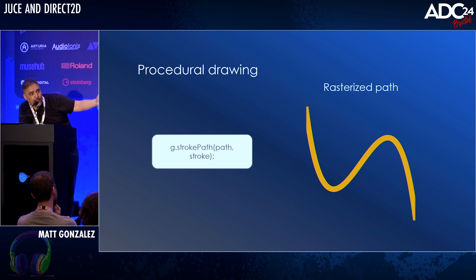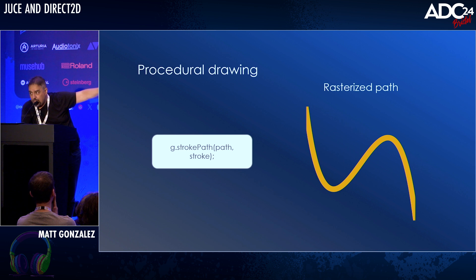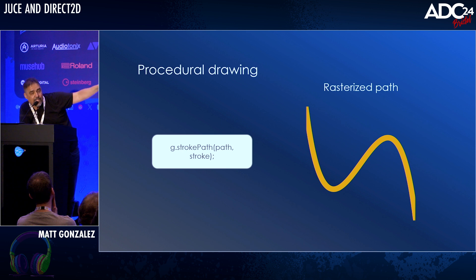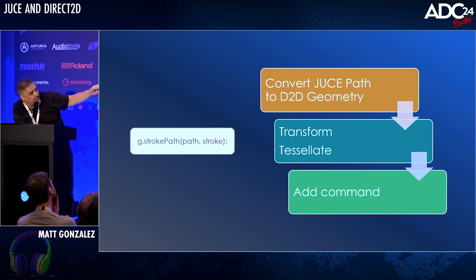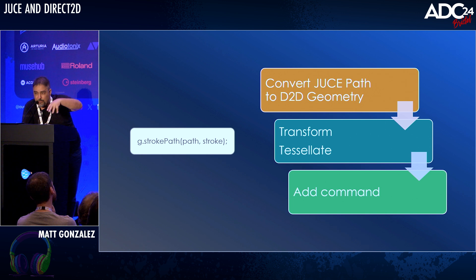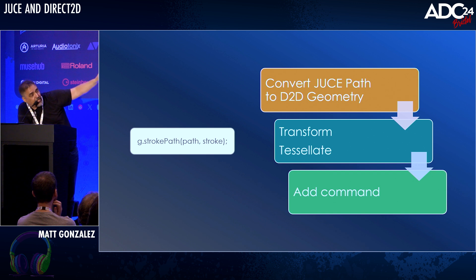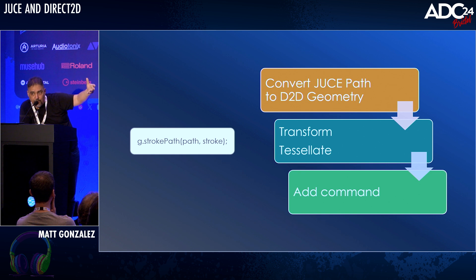For an example of what happens in the paint handler: say we've made a simple JUCE API function call, and what we'd like to see is a rasterized cubic spline. Ideally it would have nice, clean edges, anti-aliasing, a very clear contrast between the blue and orange areas, and clean curves around the control points. To get there, the renderer has to take the path you pass to it, construct a Direct2D geometry object — the Direct2D equivalent of a JUCE path — then that geometry has to be transformed and tessellated, pushed into the command queue, and passed down to the GPU once your paint handler exits.